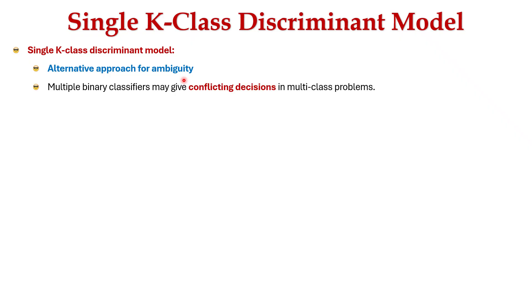Single k-class discriminant model is an alternate approach for ambiguity. Here multiple binary classifiers may give conflicting decisions in multi-class problems. To avoid this, we use a single k-class discriminant model. This model uses k linear functions: y_k(x) = w_k^T x + w_k0.